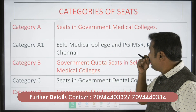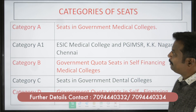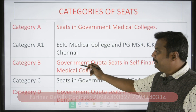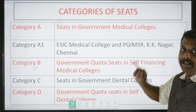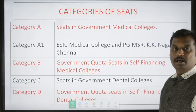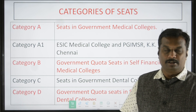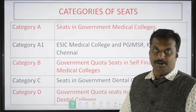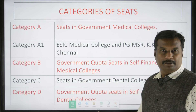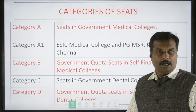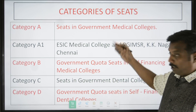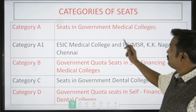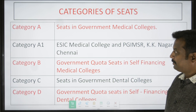In NEET 2022 counselling, there are 5 categories of seats: Category A, A1, B, C, and D. Category A consists of government medical colleges. There are a total of 36 government medical colleges with approximately 4,500 seats under state quota. That is Category A — seats in government medical colleges.